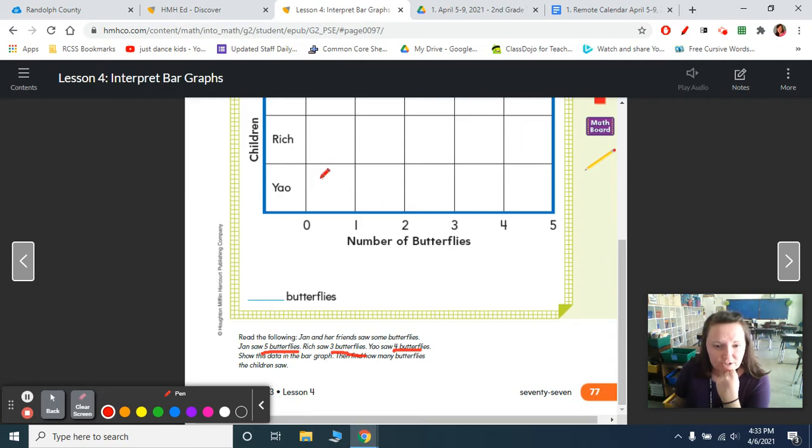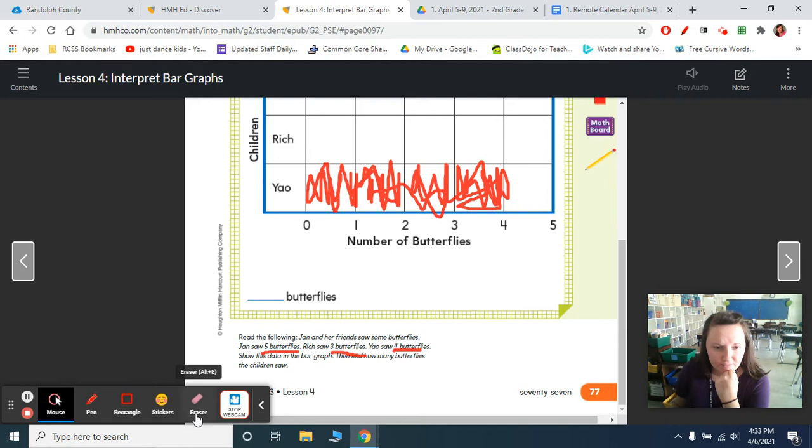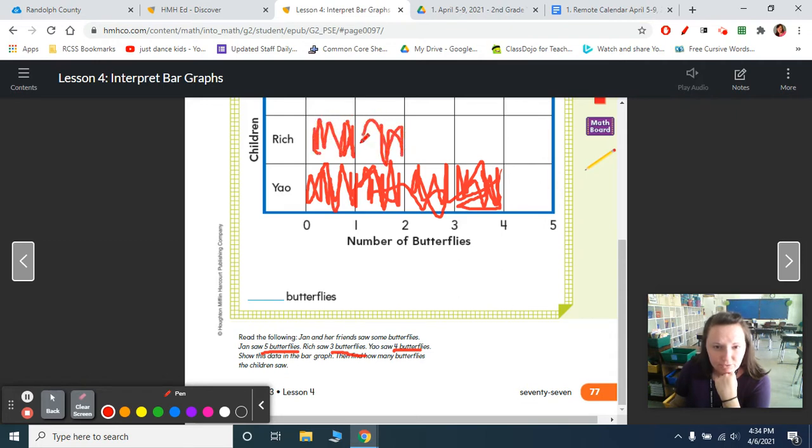Okay, so Yao saw four, so I'm going to color this in like one, two, three, four. And that's where you stop. As you can see, I did not do that right. Let me take a little bit off there. Do not go any further than four, because they only saw, Yao only saw four butterflies. So now, Rich saw three butterflies, so I'm going to color that in. One, two, three. And stop.